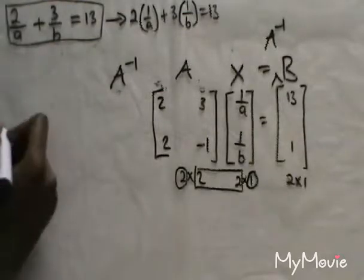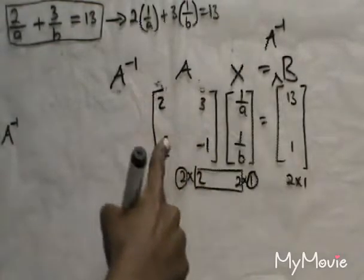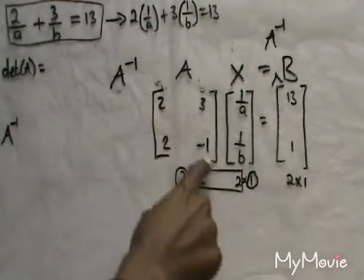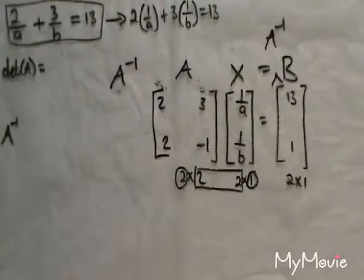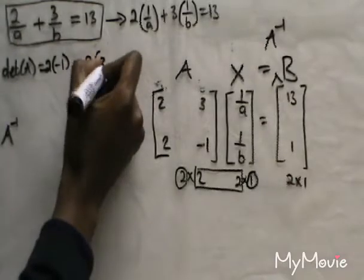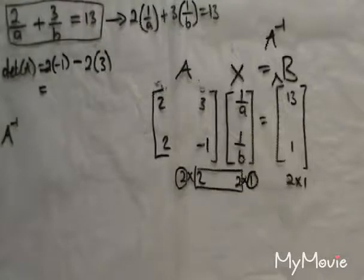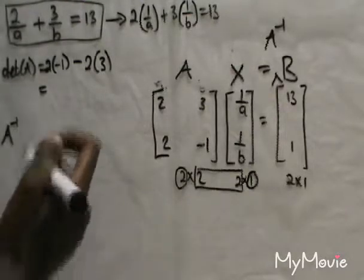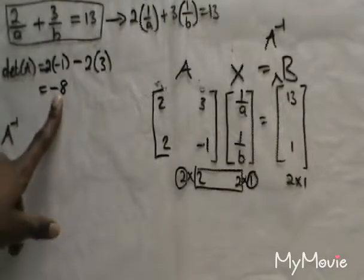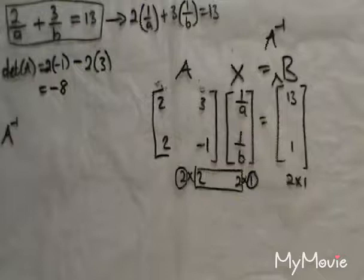To find A inverse, we need the determinant of matrix A. For a 2 by 2 matrix it's very simple — you find the product on the leading diagonal minus the product on the minor diagonal. So it's 2 times minus 1, minus 2 times 3. That's minus 2 minus 6, which equals minus 8. So that is my determinant. The matrix has an inverse because the determinant is not equal to 0. If the determinant is 0, there is no inverse; if it's anything else, it has an inverse.